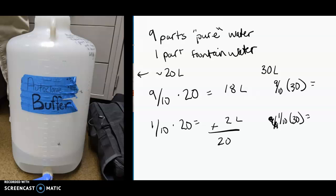That would be 27 liters of pure water and 3 liters of fountain water. If you add those up to double-check, that's 30 liters total volume.